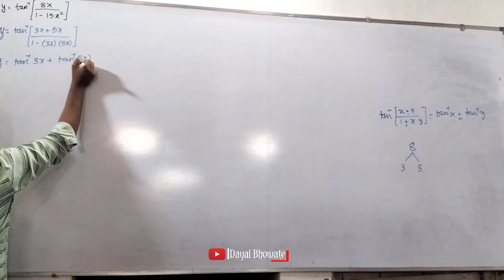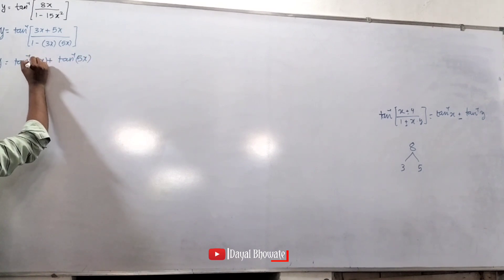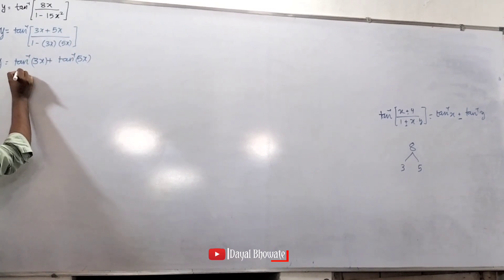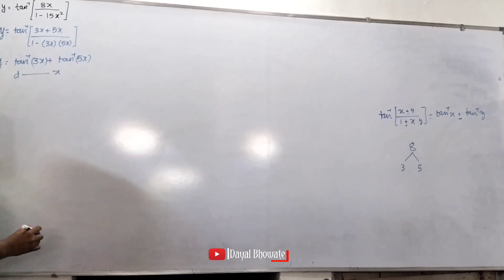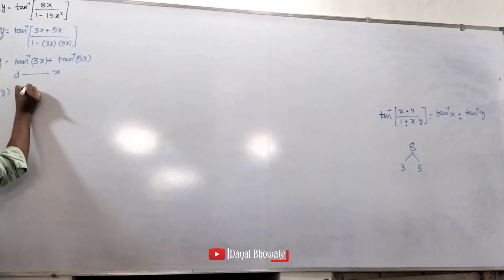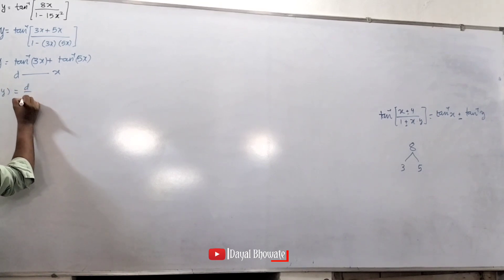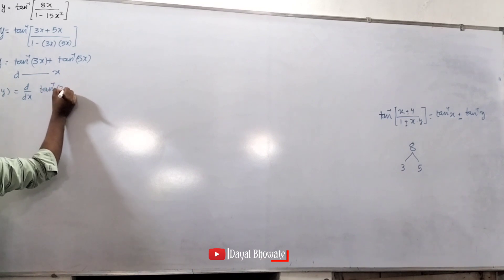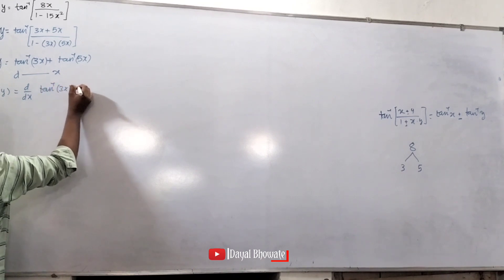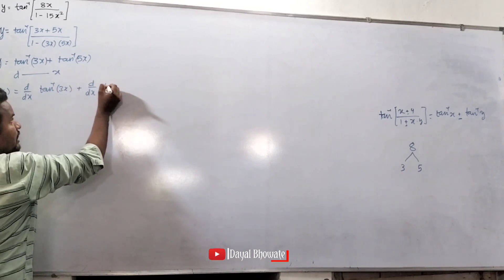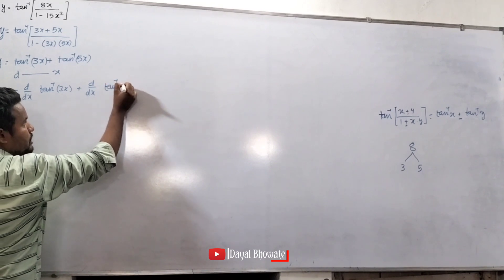5x. Differentiate with respect to x. d/dx of y is equal to d/dx of tan inverse of 3x plus d/dx of tan inverse of 5x.